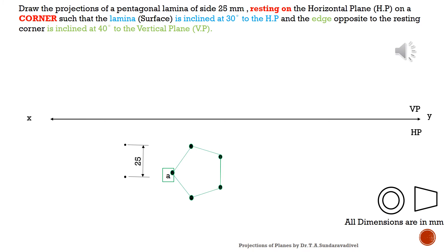Here we can see that the vertical plane is coming above the XY line and the horizontal plane is coming below the XY line. We are going to draw the pentagon as shown in the green colored lines. We are placing the scale in a vertical position and drawing a vertical line on the right-hand side, so that a corner will automatically come on the left-hand side. The size of the pentagon is 25 mm, so we measure 25 mm and locate two points.